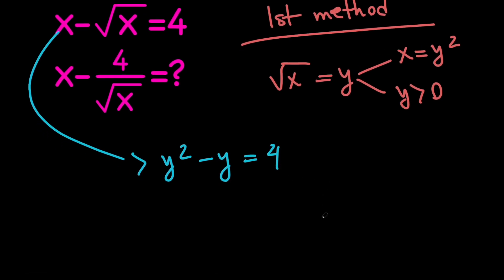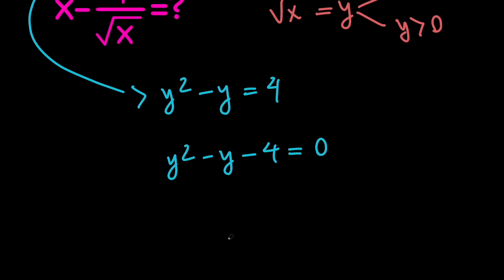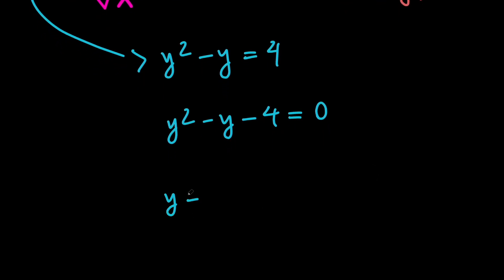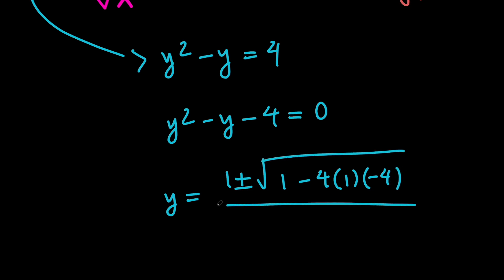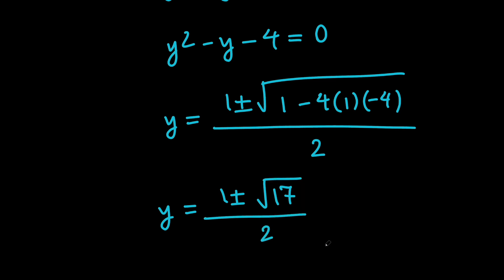Then, by subtracting 4 from both sides, we're going to get a simple quadratic equation in terms of y. If we apply the quadratic formula, we're going to get y equals 1 plus or minus the square root of 1 minus 4 times 1 times negative 4, all divided by 2. This simplifies to y equals 1 plus or minus the square root of 17, all divided by 2.